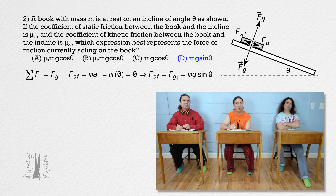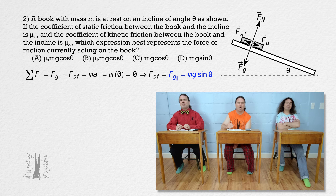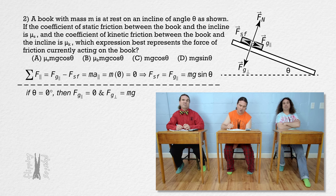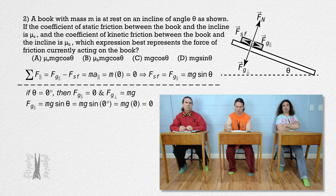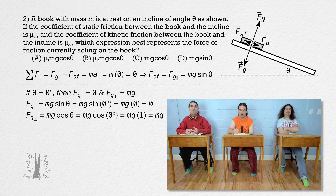How do you know the equation for force of gravity parallel? It's one of the equations we should memorize for the exam. To remember whether it's sine or cosine: if the incline angle were zero, the force of gravity parallel would be zero, and sine of zero equals zero — so it must be sine. The cosine of zero equals one, so it would not be cosine.